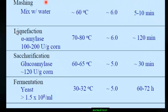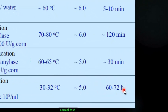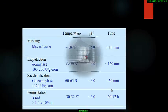The third step, saccharification, is carried out by glucoamylase at a lower enzyme concentration of 120 units per gram of corn, temperature of 60 to 65 degrees Celsius, and takes about half an hour. After saccharification, the mixture is ready for fermentation. Yeast is added at 1.5 to 10 per mL, temperature is 30 to 32 degrees Celsius, pH is 5, and total fermentation time ranges from 40 to over 60 hours.